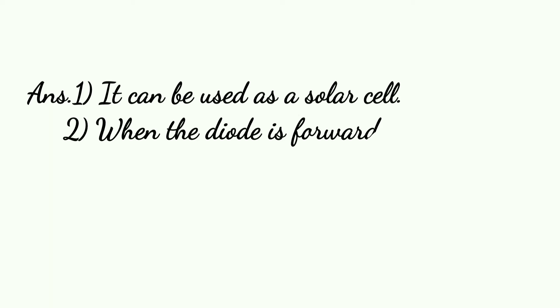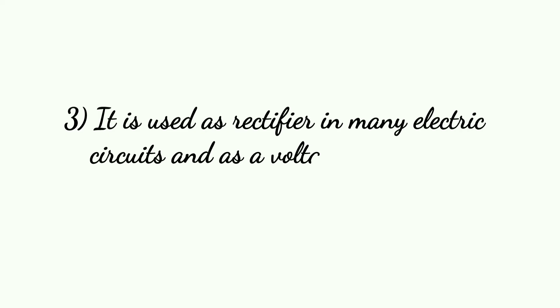It can be used as a solar cell when the diode is forward biased. It can be used in LED lighting applications. It is used as a rectifier in many electrical circuits and as a voltage-controlled oscillator in varactors.